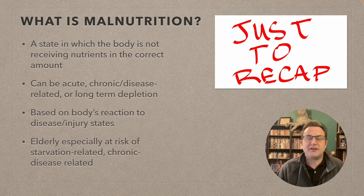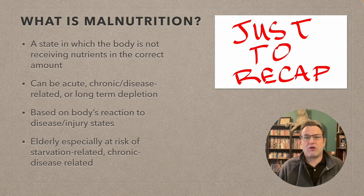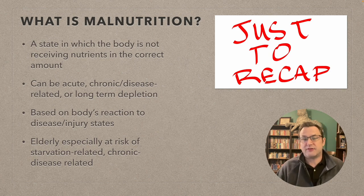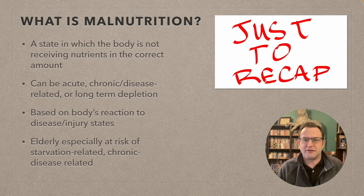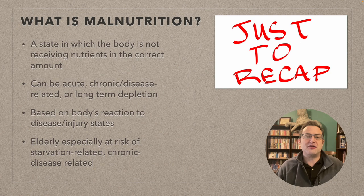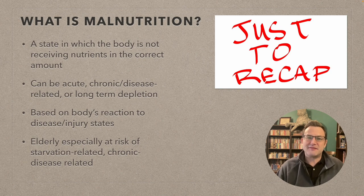To recap: malnutrition is a state in which the body is not getting enough nutrients — either not the right nutrients or not the right amount. It can be acute, chronic, disease-related, or long-term depletion based on the body's reaction to disease and injury. The elderly are especially at risk for starvation-related and chronic disease-related malnutrition given their many comorbidities. Next time we'll cover micronutrients.